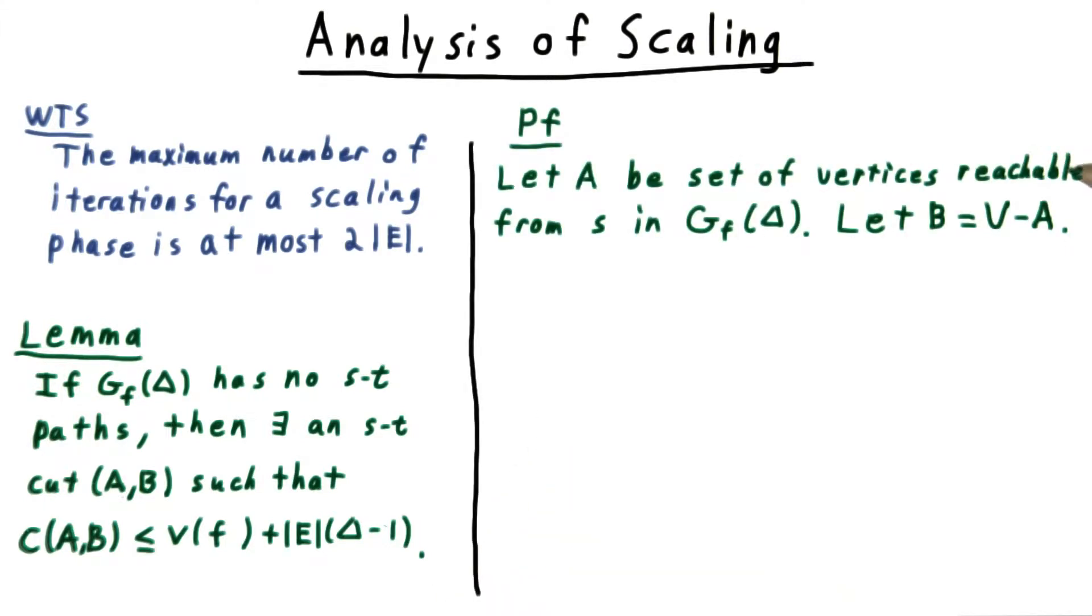The proof will feel a lot like the max flow min cut proof. We let A be the set of vertices reachable from S in our residual graph, and we let B be the complement of those set of vertices.